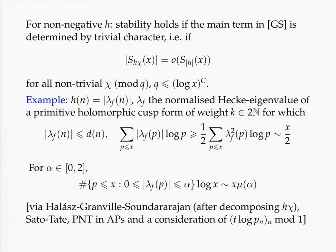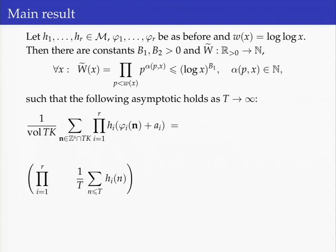Now that we know there are interesting functions in the class M, I want to move on and describe the statement of the main result. This is a little more complicated. To state the main result, we take R elements of the class of multiplicative functions I described, and R linear forms which are pairwise non-proportional. The statement says there exist two positive constants B_1 and B_2, and a function assigning to any positive real number an integer W-tilde of x.